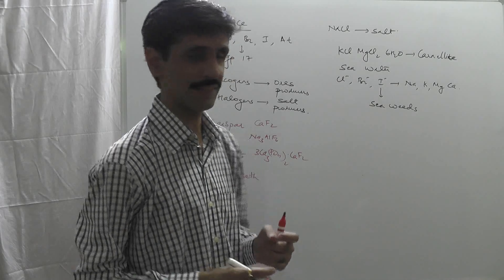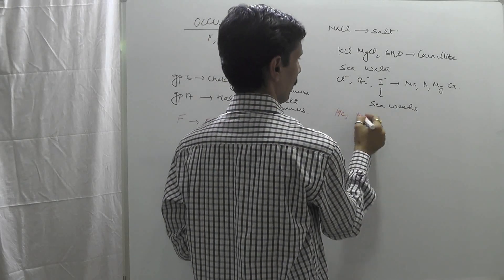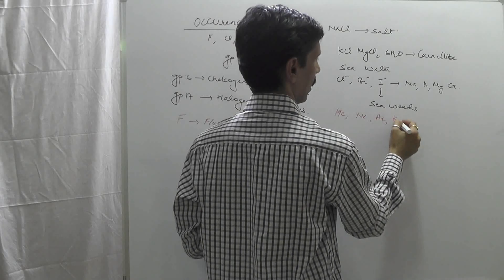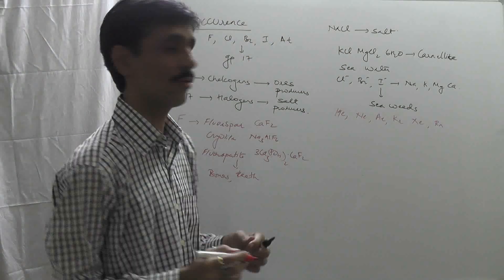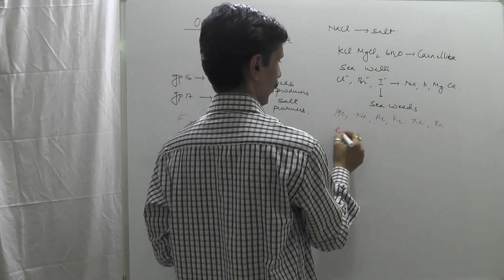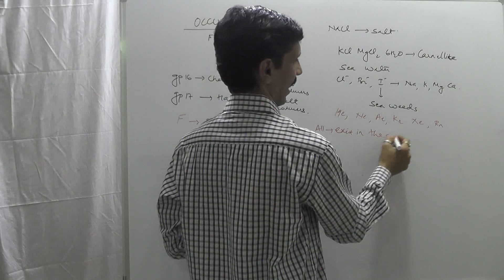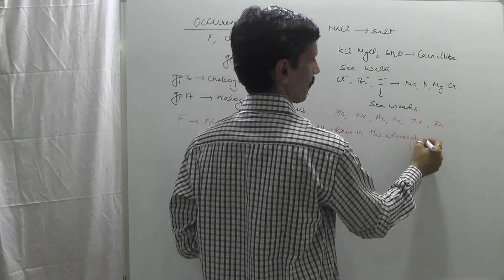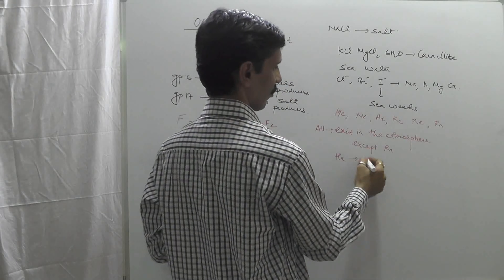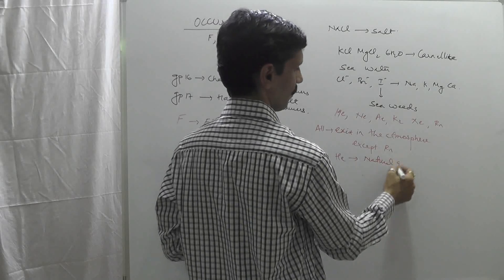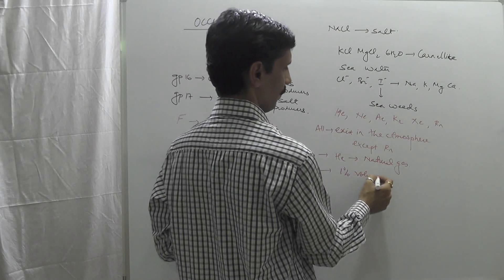Now we go to group number 18. The elements are helium, neon, argon, krypton, xenon, and radon. All of them exist in the atmosphere, except for radon. Helium is one of the major constituents of natural gas. All of these normally constitute around 1% of the volume in air.